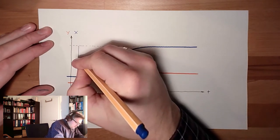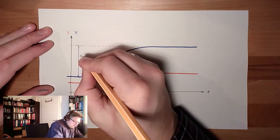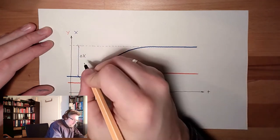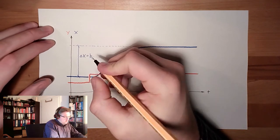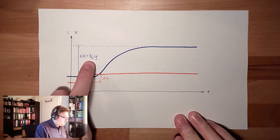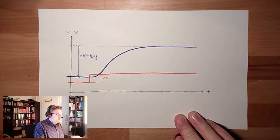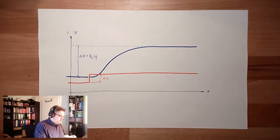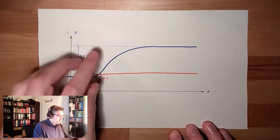We have the change of the regulated variable, and this is the gain factor of the system multiplied by the change of the correcting variable. I can read the gain factor of the system directly out of this response.